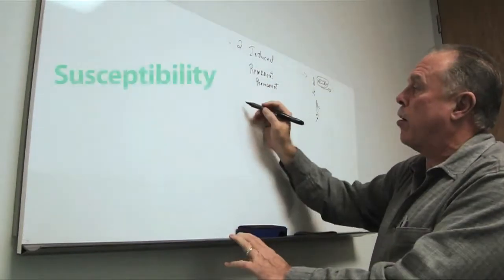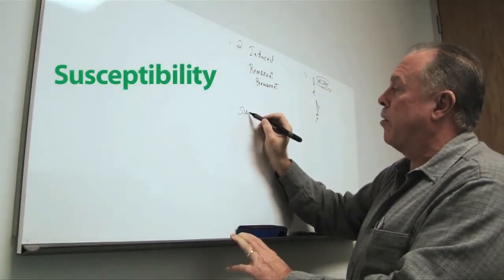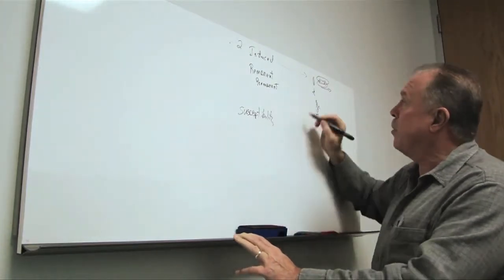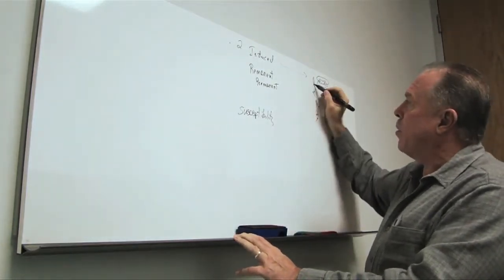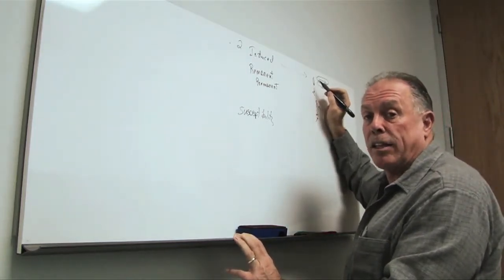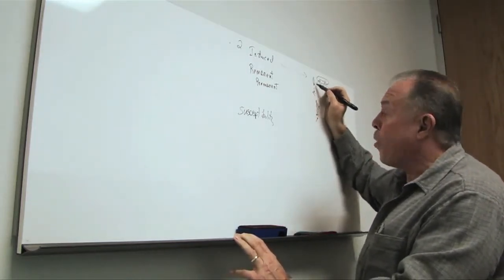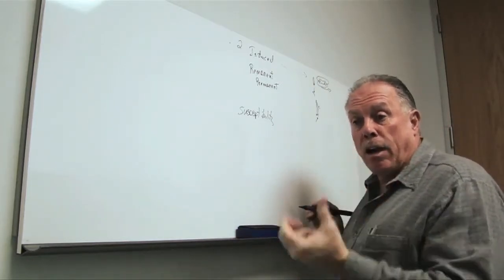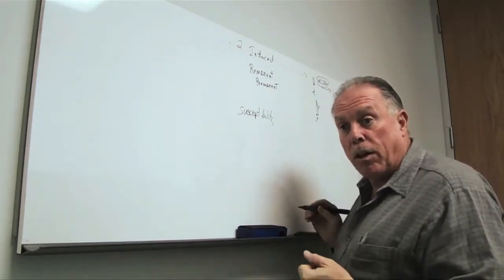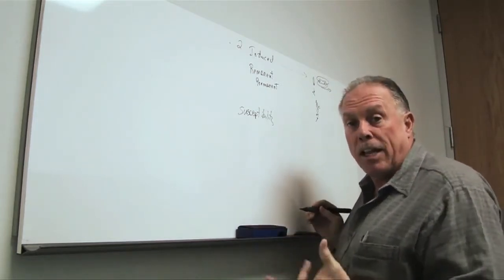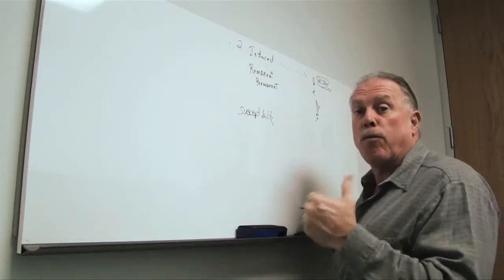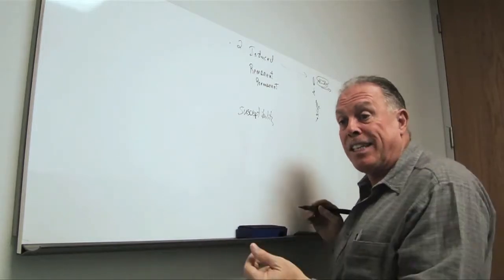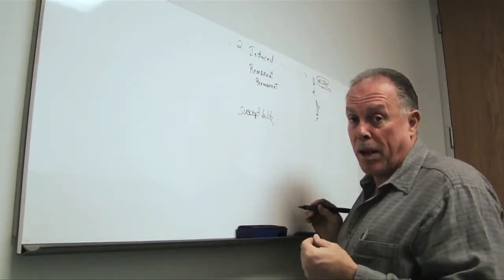The next term we want to talk about is susceptibility. Susceptibility simply means how susceptible is this paper clip to being magnetized. So it's a property of the steel, if you will, a property of the material in that items with high susceptibility are more easily magnetized or pick up a magnetic field. Therefore, they distort the Earth's magnetic field more and we can see them easier with the magnetometer.